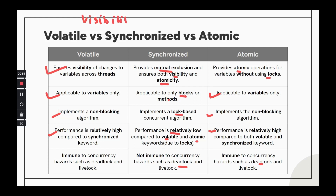The main points: the visibility problem is solved by volatile; atomic solves the problem of doing compound operations atomically; and the good old synchronized method should be used when you are clear about the critical section of code you want to protect, and you should not overuse it because that will lower performance. These three distinctions are what we wanted to put across today. I hope you liked the video and got some value out of it — knowing where to use which one. Do like, share, and leave your comments. Subscribe to the channel if you haven't already. Thank you so much!